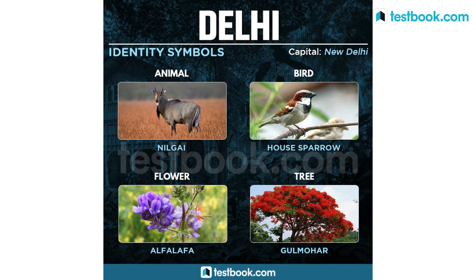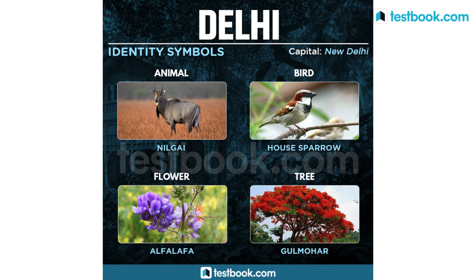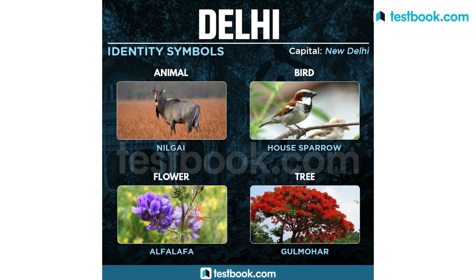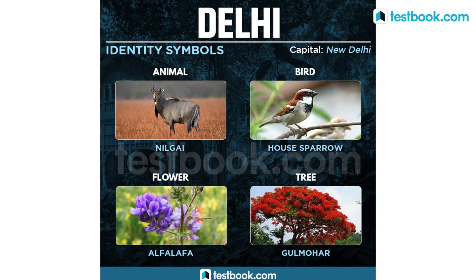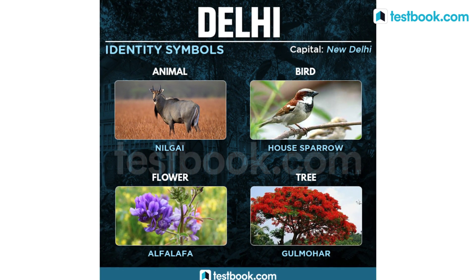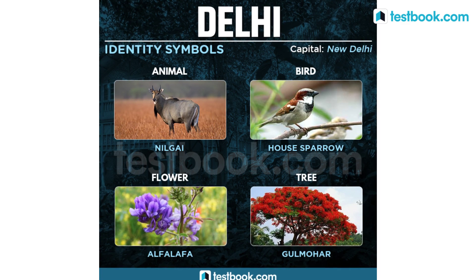For Delhi, the state animal is Nilgai, state bird is House Sparrow, state flower is Alfalfa and state tree is Gulmohar.